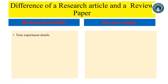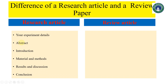Now let's discuss the differences between a research article and a review paper. In a research article, you give details of your own experiments — what you have done. A research article usually has abstract, introduction, materials and methods, results and discussion. The question is: does a review paper have the same sections? The answer is yes for some parts, but no for others.